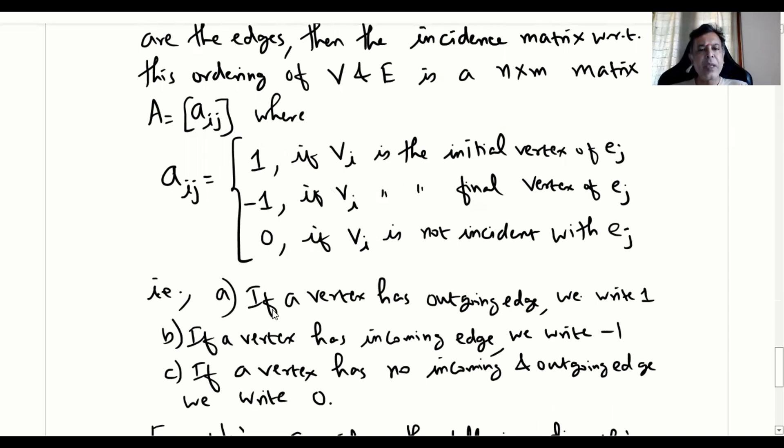That is how you do an incident matrix of directed graph. If a vertex has an outgoing edge, we write 1. If a vertex has incoming edge, we write -1. If a vertex has no incoming and outgoing edge, we write 0.